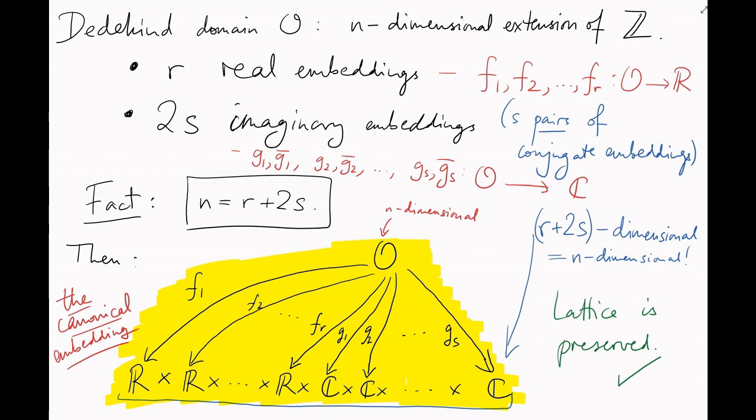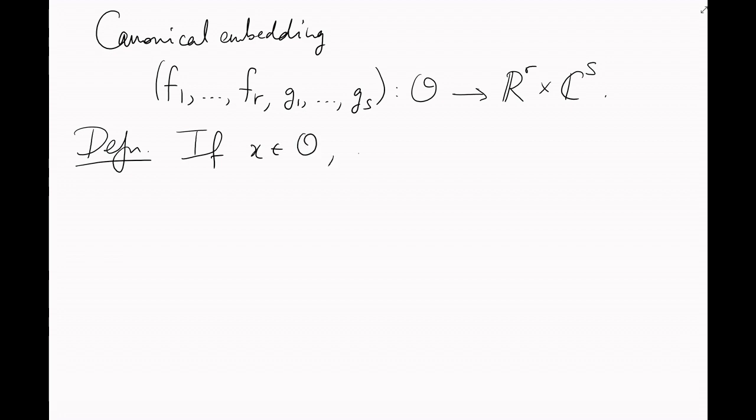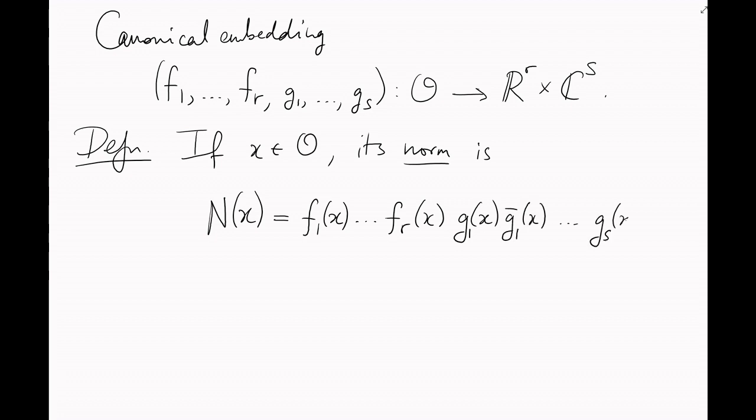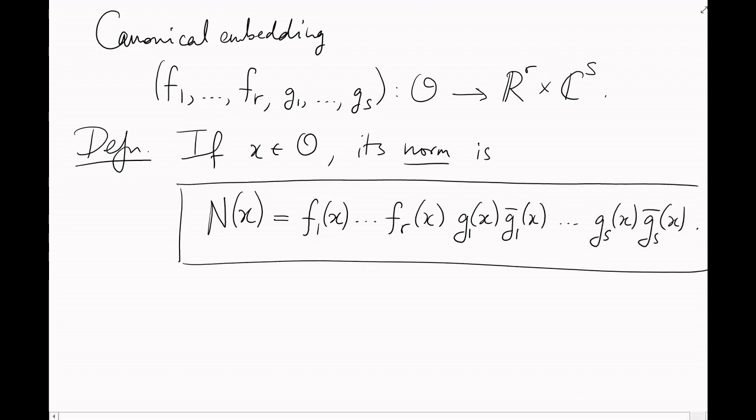Until now, I haven't actually told you what the norm of an element is in general. I've usually just given you a formula, and hoped that you believed me. Well, now I can finally define it properly. If X is an element of O, then the norm of X is defined to be the product of all the images of X under all the embeddings of O. So, F1 of X times F2 of X up to FR of X times G1 of X times G1 bar of X, and so on up to Gs of X times Gs bar of X.